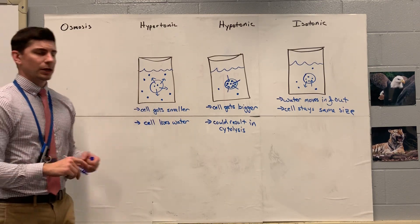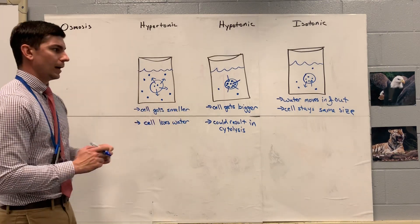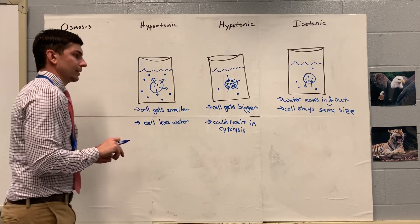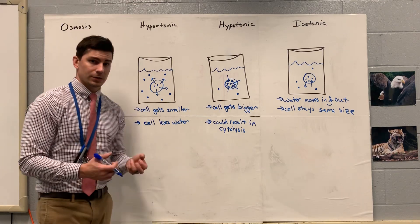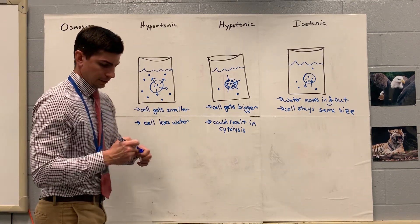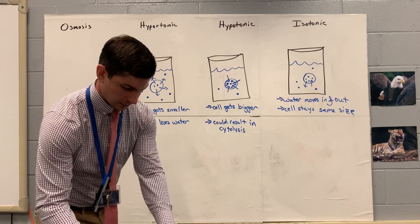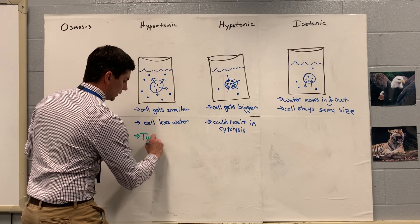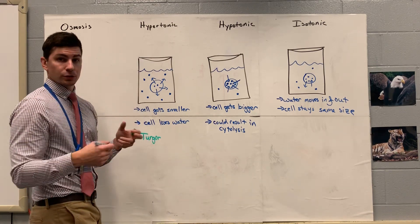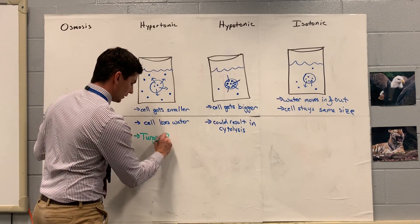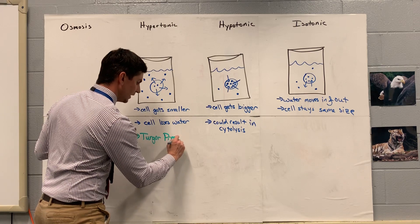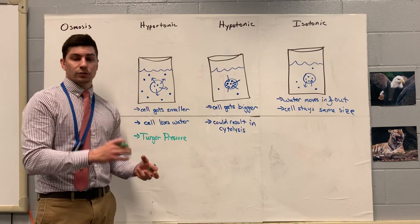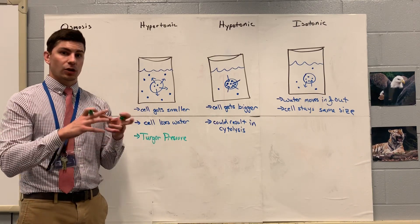One more thing I want to talk about: these are probably animal cells — they're round unless they're prokaryotic cells. But if we're talking about plant cells, plant cells have something called turgor pressure. This usually applies to our plant cells. This is created by the force or the pressure at which the large central vacuole in plants exerts on that cell wall.